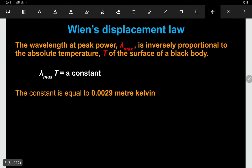Here is Wien's displacement law, it's on your datasheet. This says that the wavelength of the peak power is inversely proportional to the absolute temperature of the surface of the black body. Now that's really important - it has to be the surface. It will tell you the temperature of the star surface, but the temperature of stars increases as you go towards the center, so this is just a surface temperature.